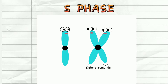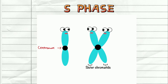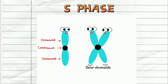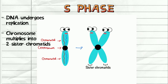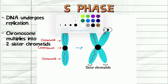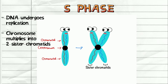Now let's look at the real chromosome structures. In humans, we actually have 46 chromosomes in the nucleus of each cell. Each chromosome has a round structure at the center called the centromere, and each centromere has two chromatids attached to it. So a chromosome consists of two chromatids attached to a centromere. During S phase, the DNA inside the chromosome undergoes replication — it makes a copy of itself — and the chromosome then has two sister chromatids, each containing one of the newly formed DNA copies.